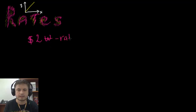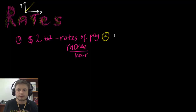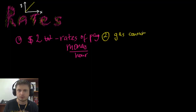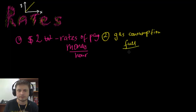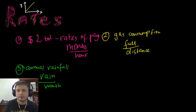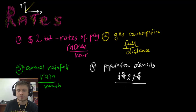Some examples of rates you'll see on a test are rates of pay — basically how much money you get per hour, so money per hour. Also things like gas consumption, or as it's known in IB books, petrol consumption — how much fuel you consume per hour, per distance, or per something. You may also hear things like annual rainfall, which is how much rain you get per month, or even population density — people per square kilometer. All of these are rates.